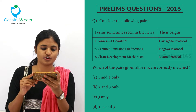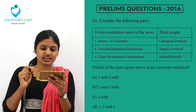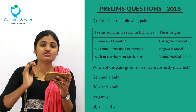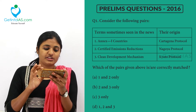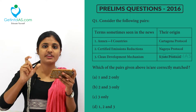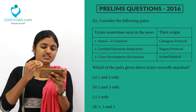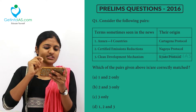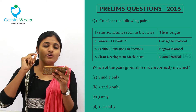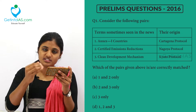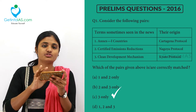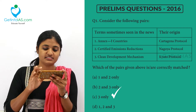The Nagoya Protocol deals with access to genetic resources and the fair and equitable sharing of the benefits arising from their utilization. Annex 1 countries are developed countries and non-Annex countries are developing countries — both are under the Kyoto Protocol. Certified Emission Reduction and Clean Development Mechanism are also under the Kyoto Protocol. So options 1 and 2 are wrong, and option C (3 and 4) is the correct answer.